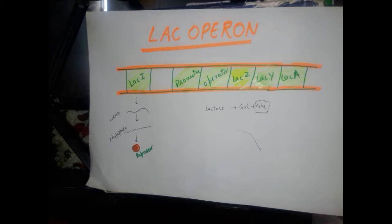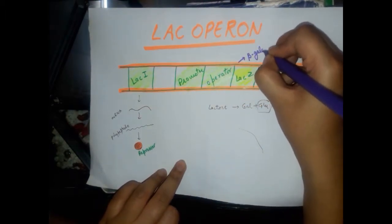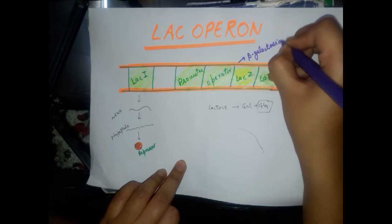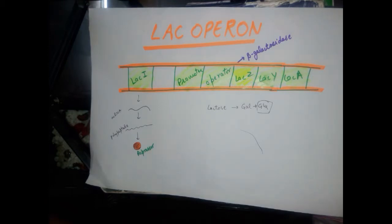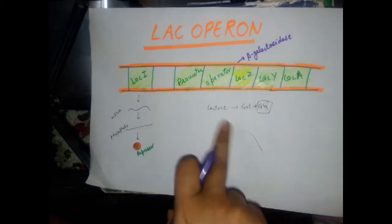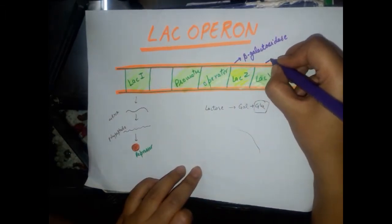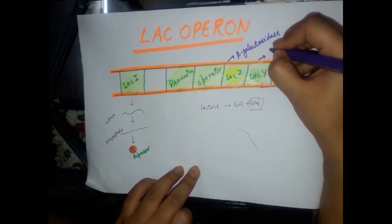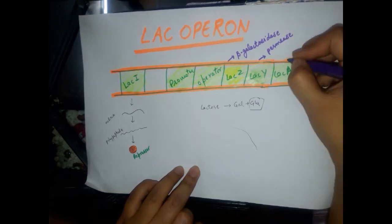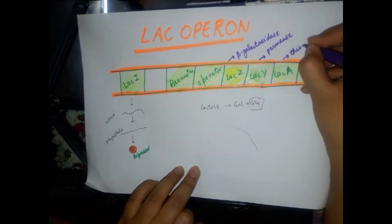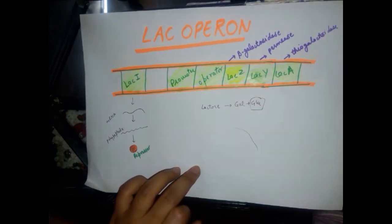The lacZ gene is responsible for the synthesis of the enzyme beta-galactosidase. As the name suggests, galactosidase refers to the cleavage of the galactoside bond — the bond present between galactose and glucose in lactose. The lacY gene is responsible for the synthesis of the enzyme permease, and lacA is responsible for the synthesis of the enzyme thiogalactosidase.